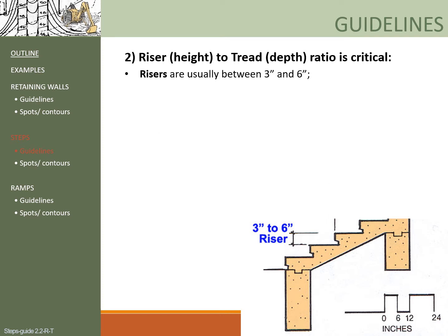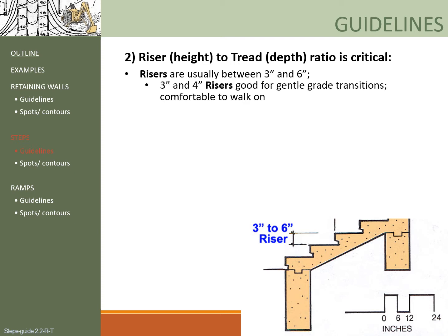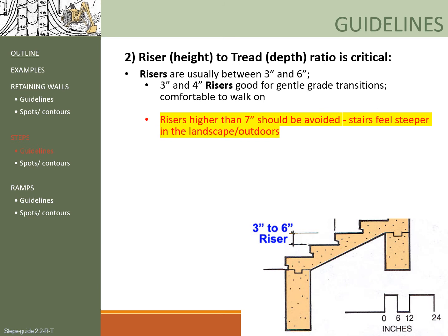In terms of risers, they should be between 3 inches and 6 inches high. If you are using stairs to accommodate a moderate grade transition, 3 to 4 inch risers are pretty good and comfortable to walk on. Anything above 7 inches high should be avoided — they just feel too steep and cannot be comfortable.